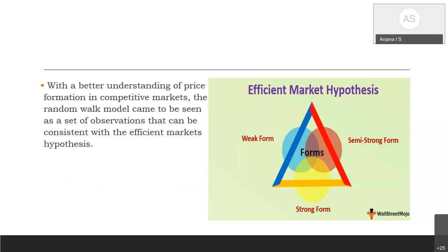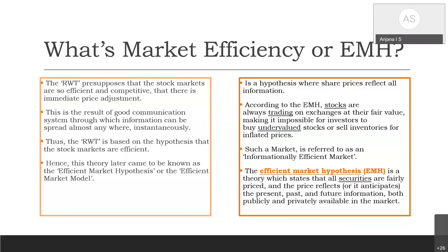The basic principles of the random walk model are: first, all information available in the market is reflected in stock prices; and second, the market is efficient. Because of this efficiency, the theory came to be known as the Efficient Market Hypothesis or the Efficient Market Model.